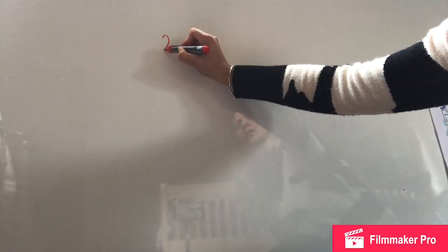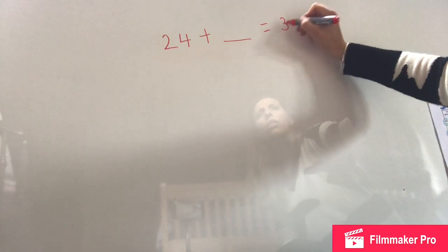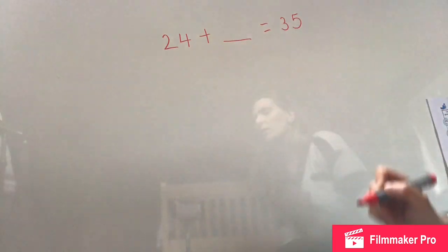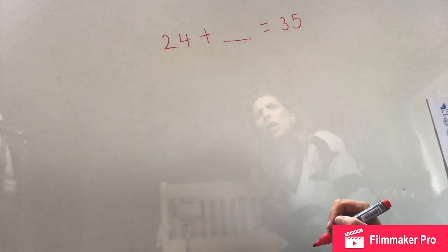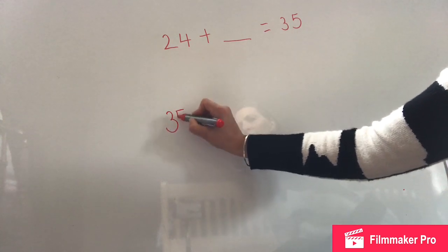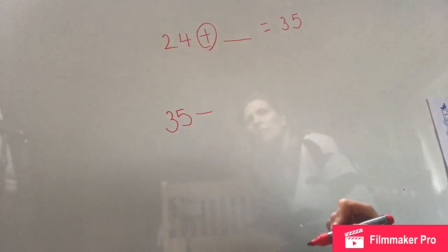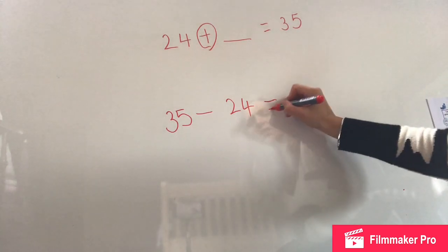Next thing — I'm going to give you a missing number problem. So if I were to give you this number sentence: 24 add something equals 35, what would you do? For me, I've got to find out this missing number here. So I'm going to use my inverse to help me with that. Remember, the inverse is the opposite operation. So I'm going to start with 35 — the opposite to an add is take away. Then I need to take away the number I already know, 24, and I'm going to find out my answer.